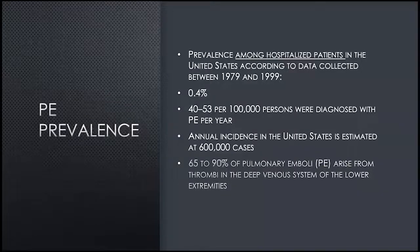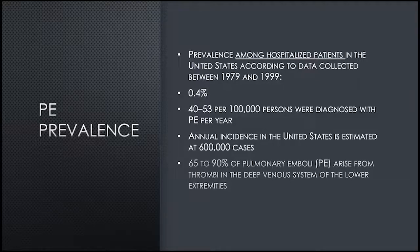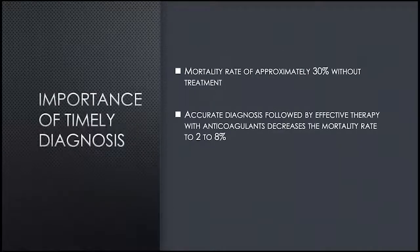So first, general information. PE is fairly prevalent in our hospitalized patients. If we look at all hospitalized patients between 1979 and 1999, 0.4% actually had PE — that ends up being about 600,000 cases a year in the U.S. 65 to 90% of these PEs arise from thrombi in the deep venous system of the lower extremities. It's important to diagnose pulmonary embolism quickly because the mortality rate is high, approximately 30% without treatment, falling dramatically to 2 to 8% once patients are treated.